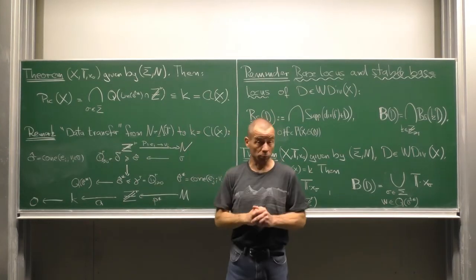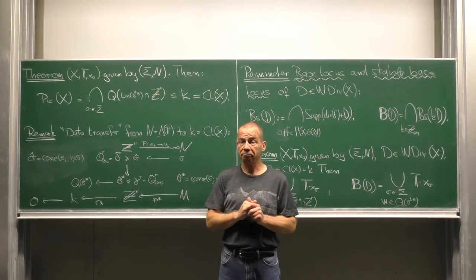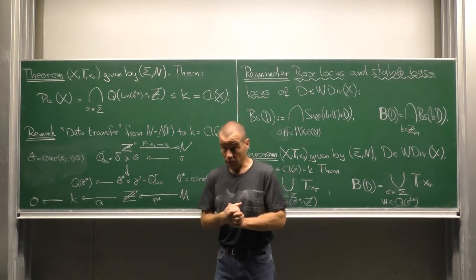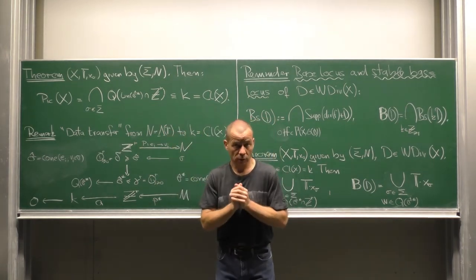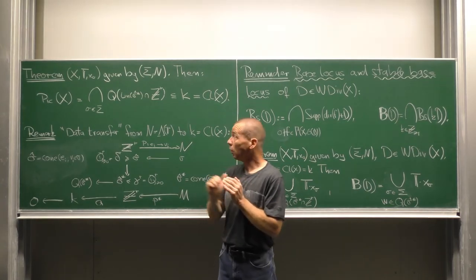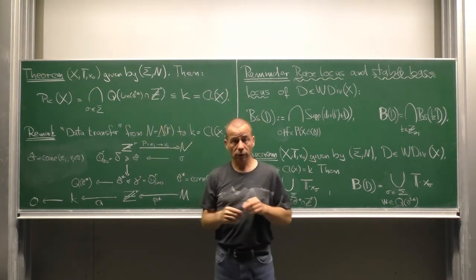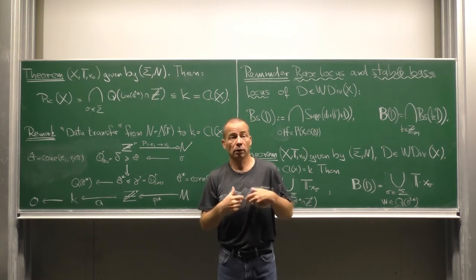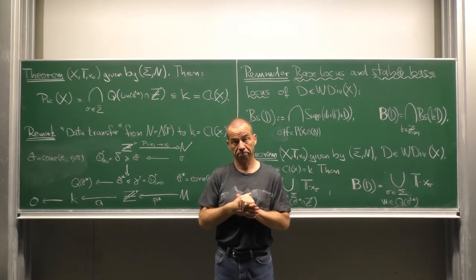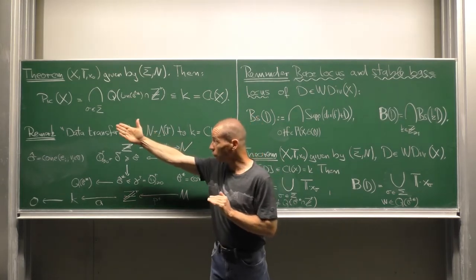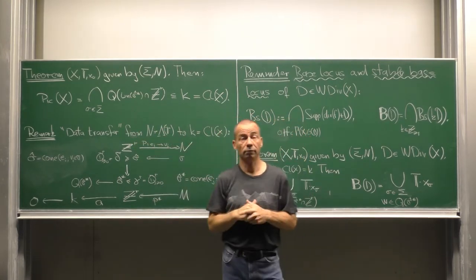Here is the Picard group of the toric variety. It is the intersection of all the subgroups of the divisor class group hosting divisor classes that are principal at the limit points x sigma. That is how the Picard group sits inside the divisor class group.